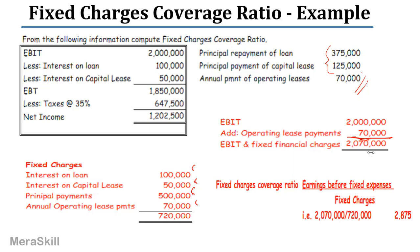To clarify the fixed charges coverage ratio: when we arrived at EBIT, the operating lease payment had already been deducted from income, so it is added back to get earnings before fixed charges. The fixed charges include interest on loan, interest on capital lease, repayment of loan, repayment of capital lease, and annual operating lease payments — totalling $720,000. EBIT was $2,000,000 and we added back $70,000 of annual operating lease payments.